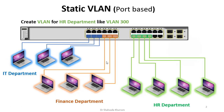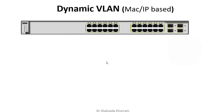Yeh small networks ke liye theek hai, lekin large networks mein jahan hundreds of switches use hote hain, wahan yeh scenario theek nahin rehta. Next, hum dekhte hain dynamic VLAN. Dynamic VLAN jo hoti hai woh basically MAC aur IP based hoti hai. Aur yeh kaise kaam karti hai — hamare paas switch hai.